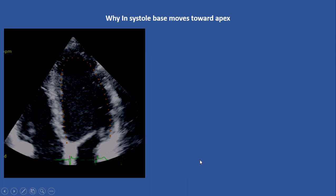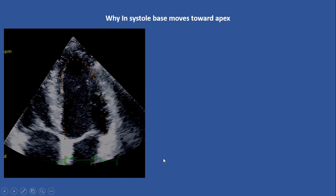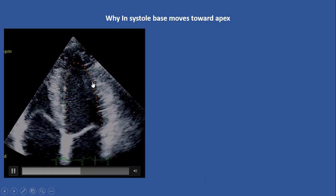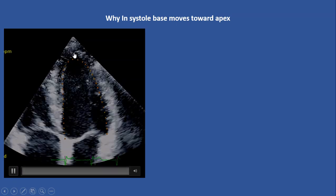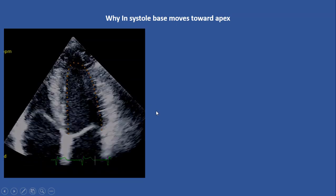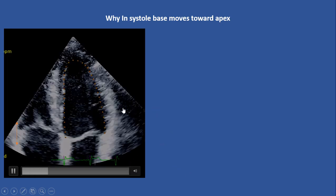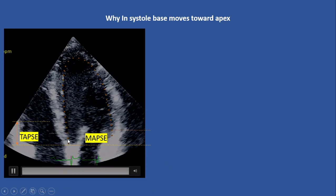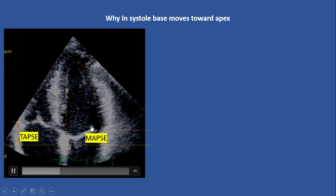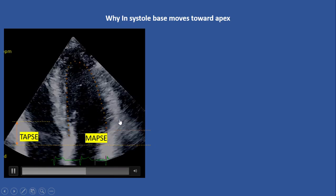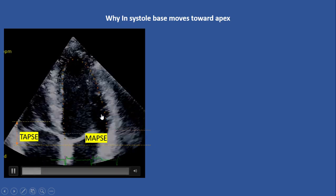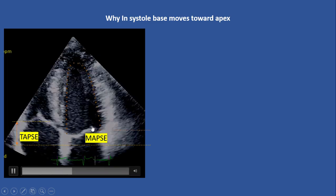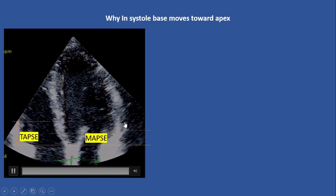Let's start this presentation with this question: Why during systole does the base of the heart move toward the apex, while the apex is stable and doesn't move at all? We can measure this movement of the base of the heart by TAPSE and MAPSE, and these changes are very clear during cardiac activity. Why is that?